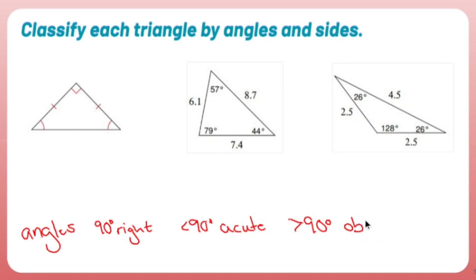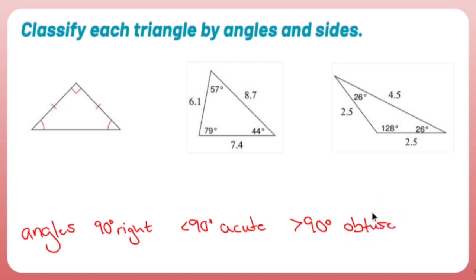Now, if you're thinking should it be that all the angles are greater than 90 — look, if all three angles are greater than 90, you're going to have triangles with angles bigger than 180. That's not possible.